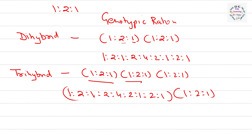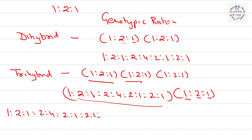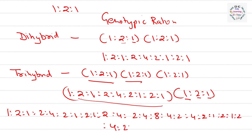You multiply the whole result first with 1, then with 2, then with 1. So you get: 1:2:1:2:4:2:1:2:1 (×1), then 2:4:2:4:8:4:2:4:2 (×2), then 1:2:1:2:4:2:1:2:1 (×1). Writing it all out: 1:2:1:2:4:2:1:2:1:2:4:2:4:8:4:2:4:2:1:2:1:2:4:2:1:2:1 — this is the genotypic ratio for trihybrid cross.